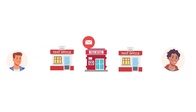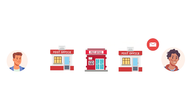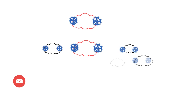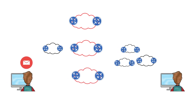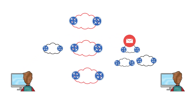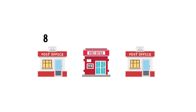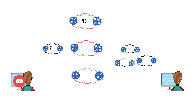Each network is just like a post office, and mail goes from one post office to another until it reaches the right town. That town's post office will then deliver the mail within that town. Similarly, data packets cross the internet by hopping from network to network until they reach the network that contains their destination internet protocol address.